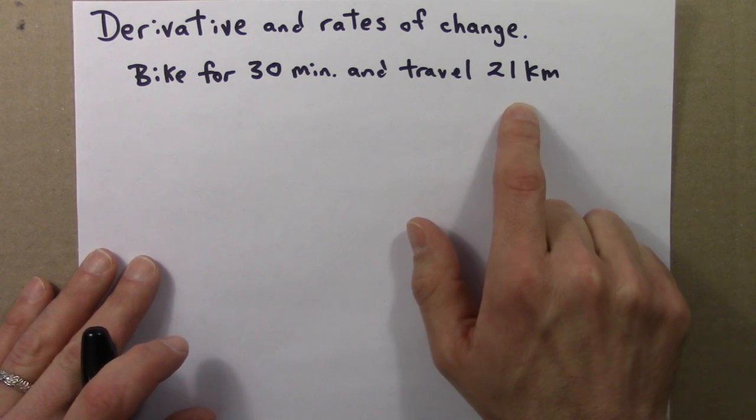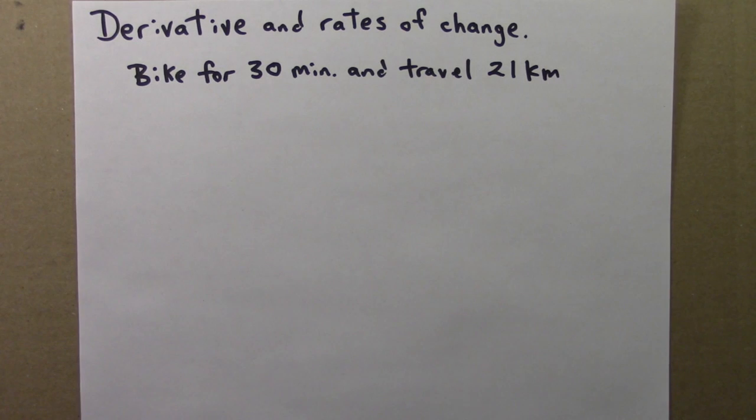And you might want to know, on average, how fast was I going? What was my average speed during this bicycle ride? Well, we can calculate this as follows.